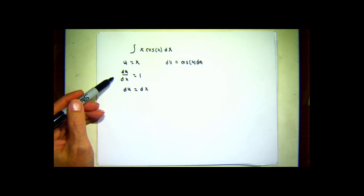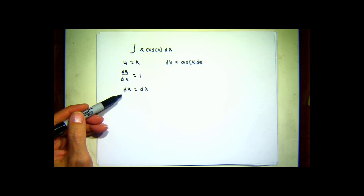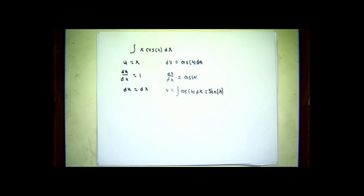Instead, I'm going to let u be x, and dv be the rest of it. If u is x, then the derivative of u with respect to x is one. du would be one times dx, that is just dx. dv equals cosine x dx. Using the standard notation, dv/dx is cosine x. v must be an antiderivative of cosine x, one of which is sine x. We'll just figure out one antiderivative, and then add the constant of integration in.